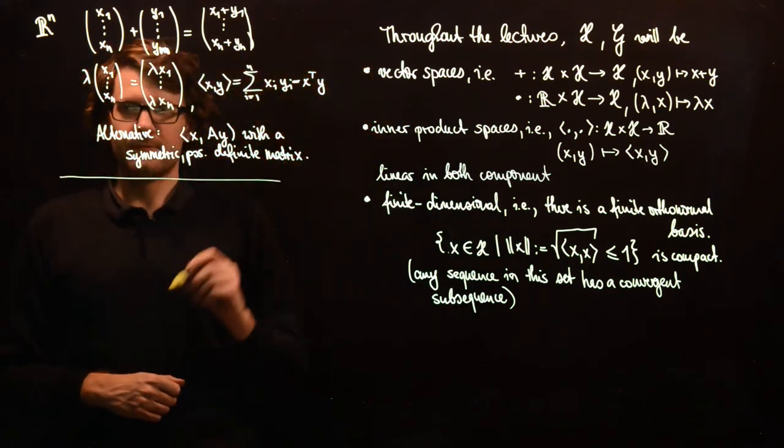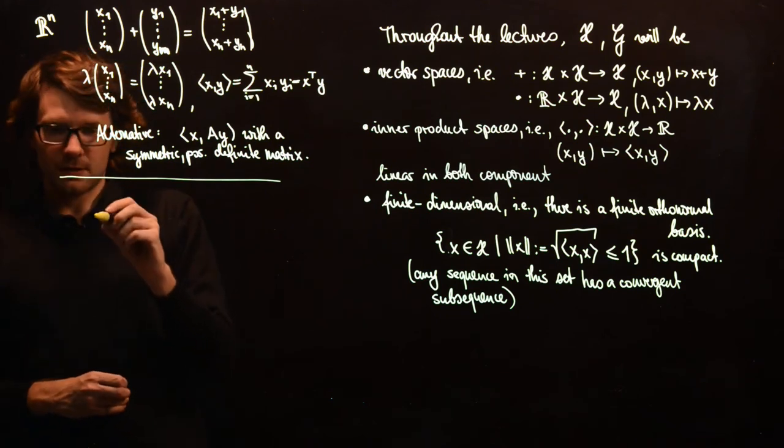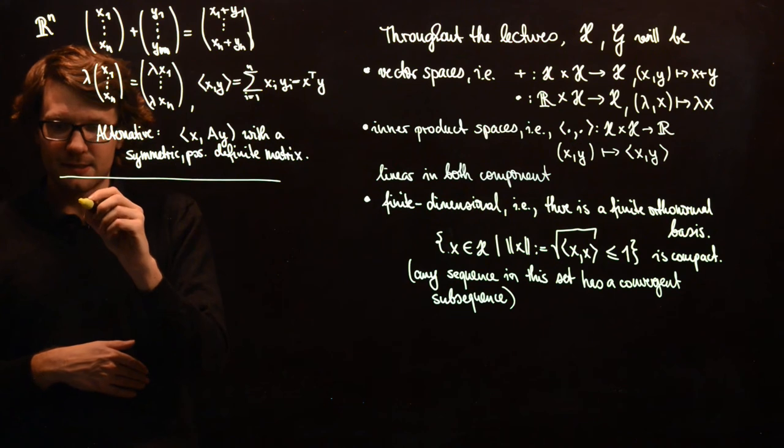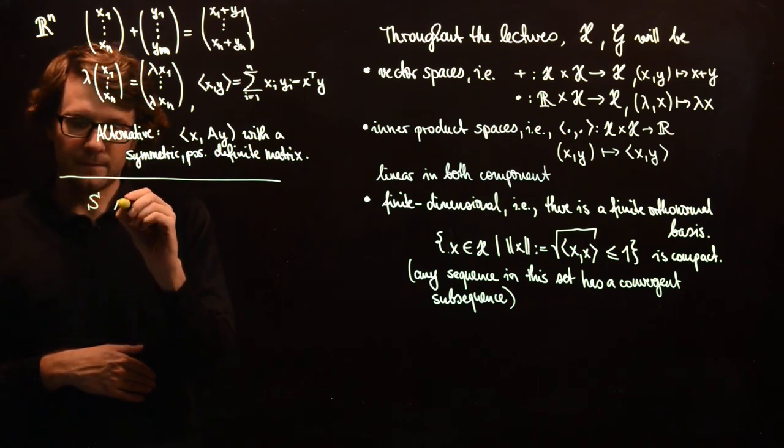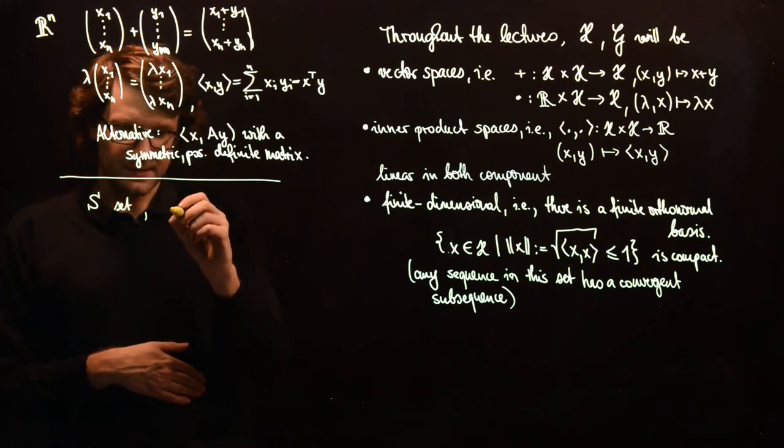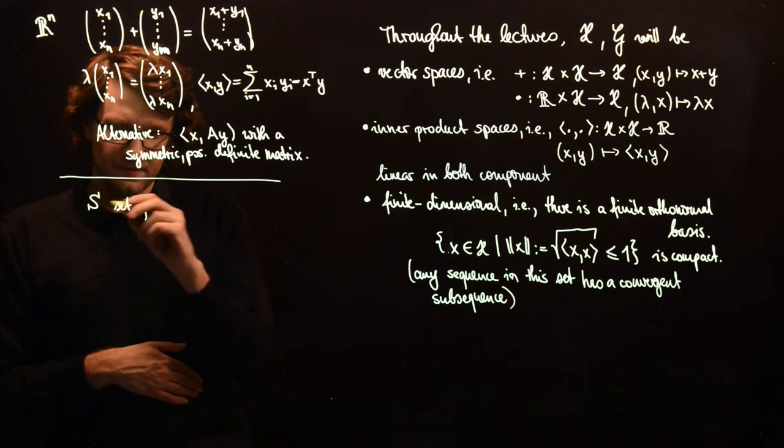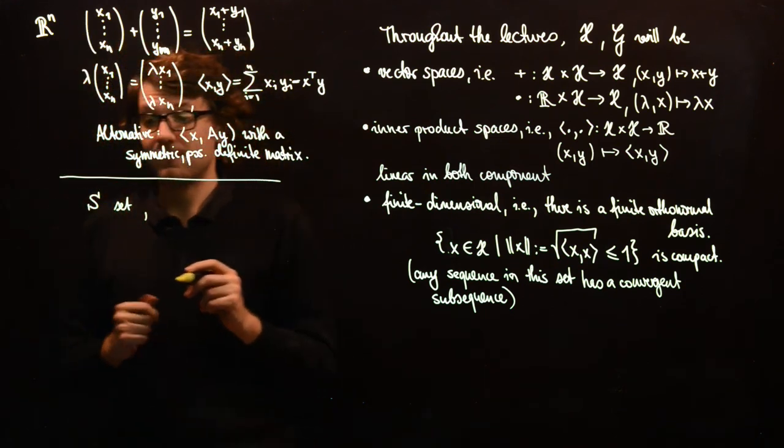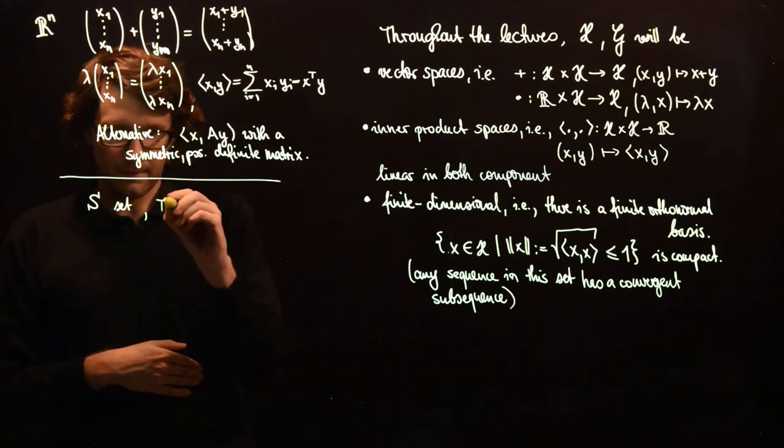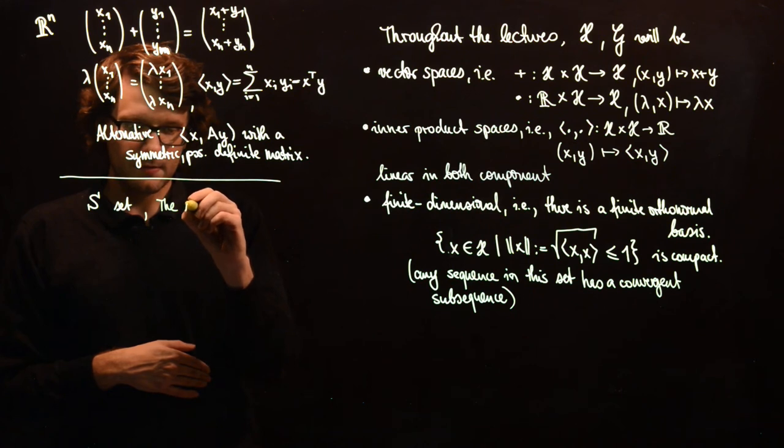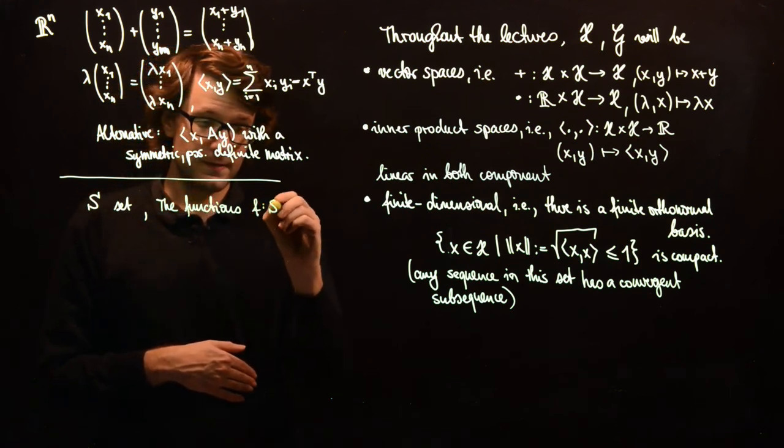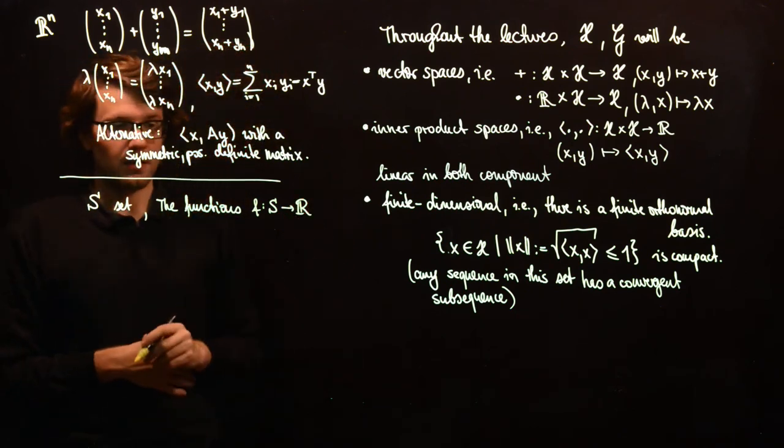So we have also seen the space of curves. In general, you can take a set. For the inner product you need more, but just let's take a set here. If S is a set, then the space of real valued or vector space valued functions on this set is also a vector space. So the functions F from S to R form a vector space.